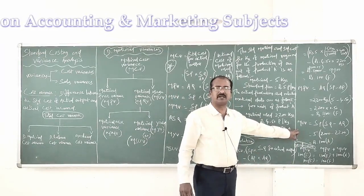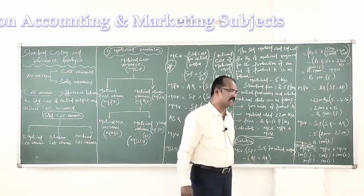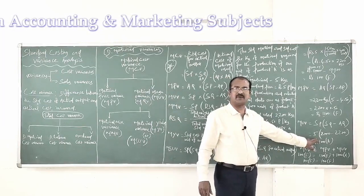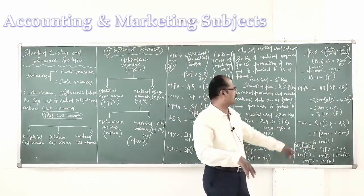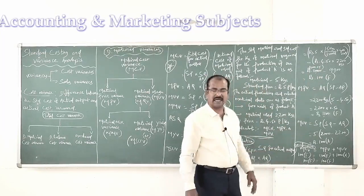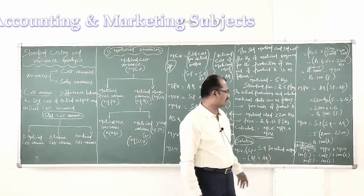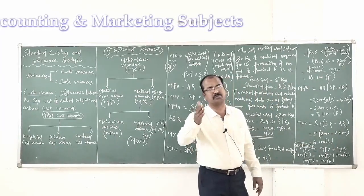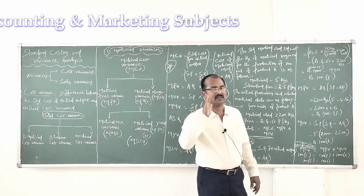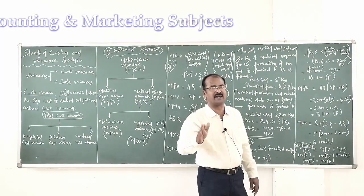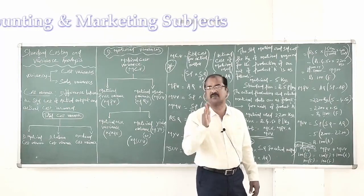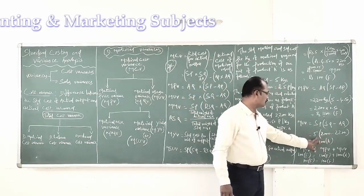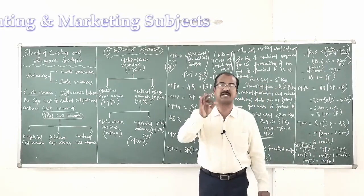Material usage variance formula: standard price × (standard quantity − actual quantity). Standard price = 5 rupees; standard quantity for actual output = 2000 kg; actual quantity = 2200 kg. The actual quantity used is more than the standard quantity, so the result is adverse. MUV = 5 × (2000 − 2200) = 5 × 200 = 1000 rupees adverse.